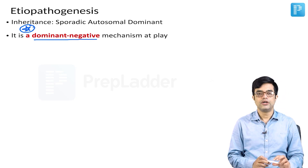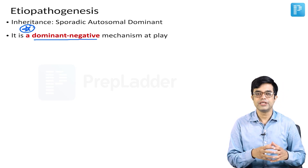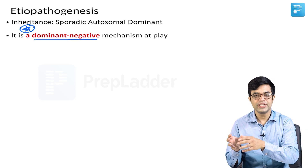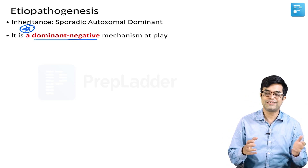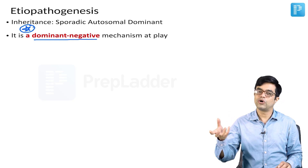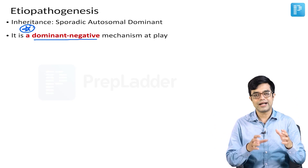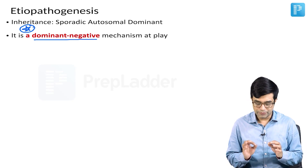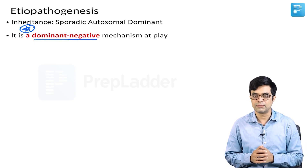What is a dominant negative? Dominant negative means the absence of normal protein is not responsible for the disease. It is the abnormal protein which is formed that affects the functioning of the normal protein. It is like a chaos-making student in the class who will not study himself and will not let the other students study either. That mechanism is called dominant negative. It will become more clear as we talk in detail about the pathogenesis.